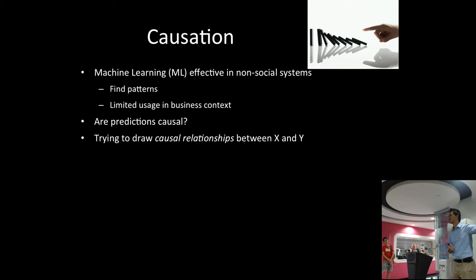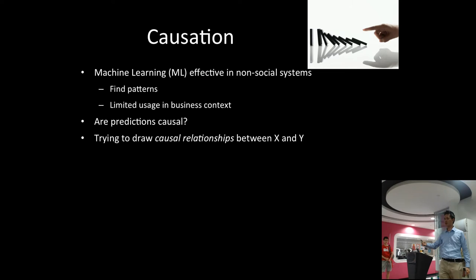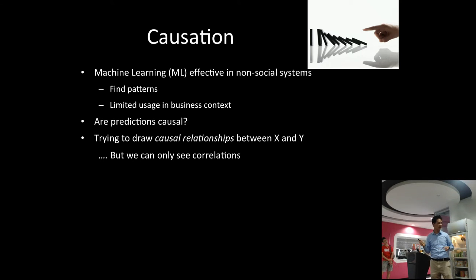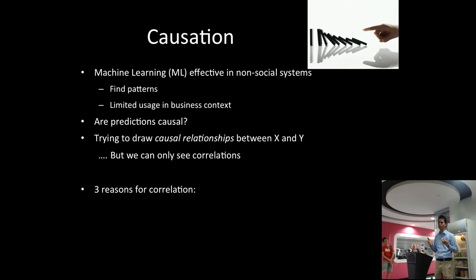But the problem with data is that a lot of times we can only see correlation — some form of correlation, maybe linear, maybe non-linear models, SVMs. Whatever it is, it's more or less co-occurrences of data between two variables. And why do we see this? There are really three reasons for correlation in our data. One of course is causality — X causes Y. But then you also get reverse causality — Y actually drives X, the opposite of what we're assuming. This is really disastrous if you're trying to advise your boss on what to do.